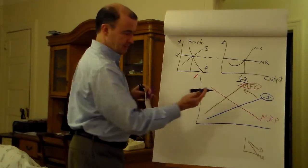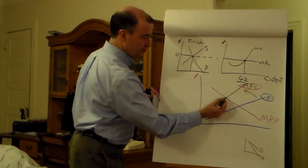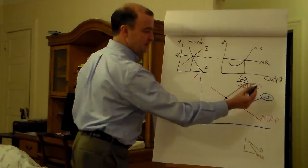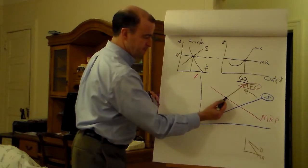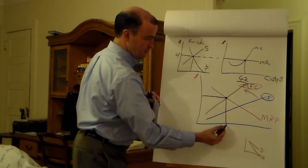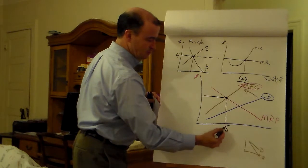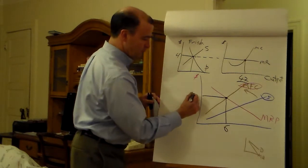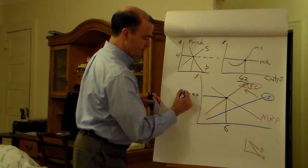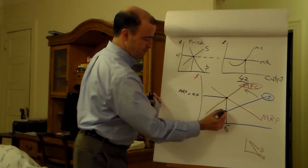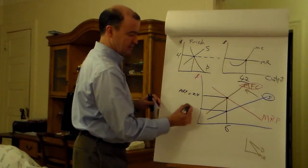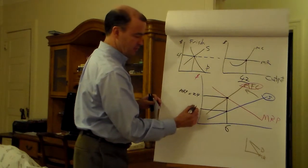So how many people can hire? Well, that depends on the profit-maximizing solution, which is MFC equals MRP. We said it was six workers. We said they were worth 24 for their marginal revenue product. But the wage that the workers settle for is only 14.